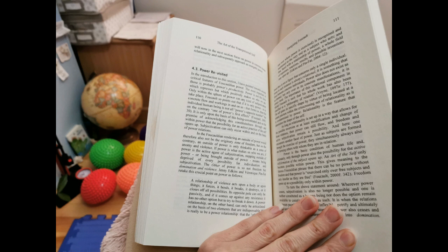To turn the above statement around, wherever power ceases, subjectivation is also no longer possible, and one is neither constituted as a human being, nor does the option remain available to constitute oneself as such. It is when the relations between people ossify, become inflexible, petrify, and ultimately turn unchangeable and set in stone, that power also ceases and becomes something different. It turns into domination. Domination arises each time the relations between people are set in a way they are no longer reversible, and any attempt at change is prevented and blocked.